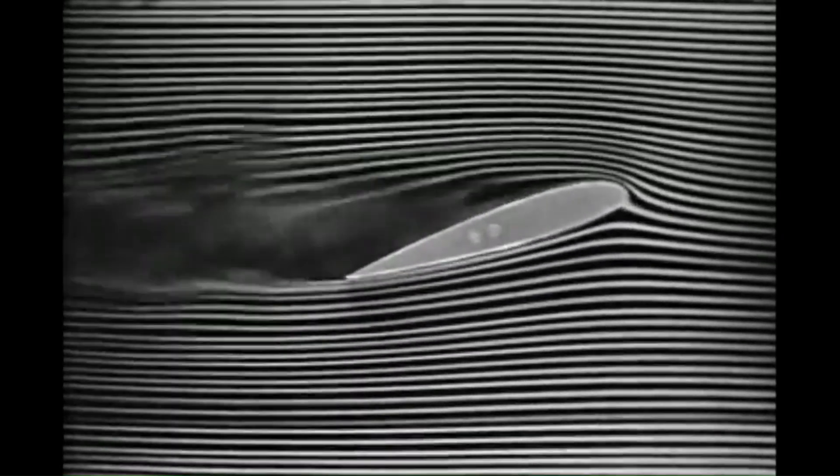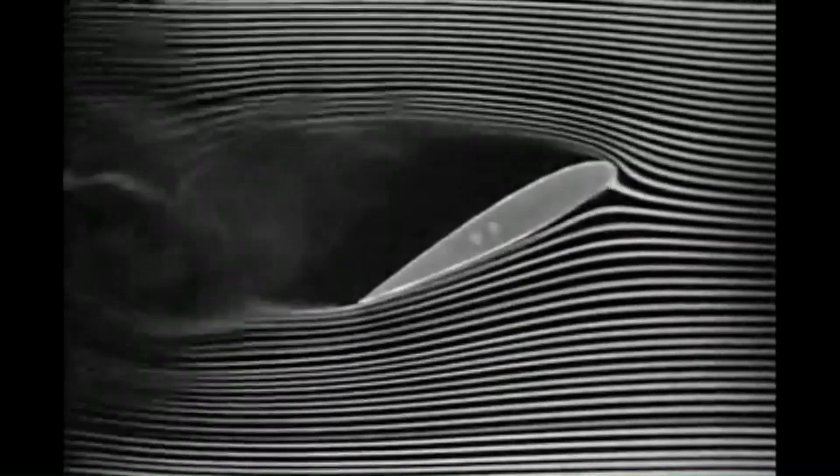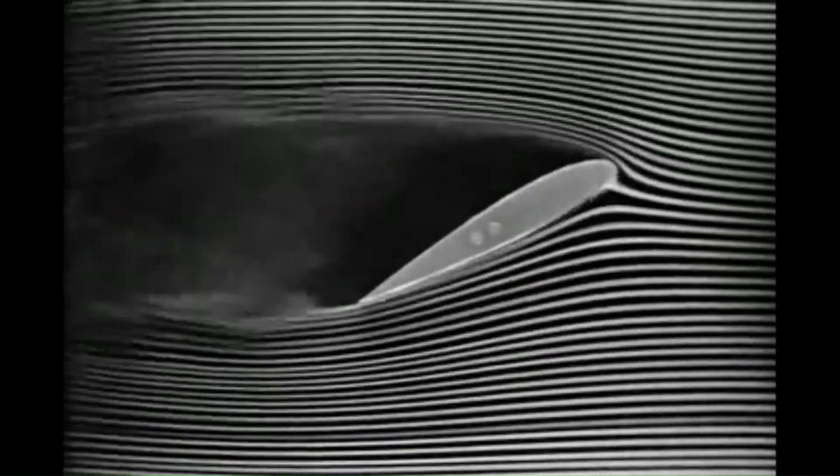As the angle of attack increases, it becomes harder for the air to keep following the contour as it flows over the upper surface of the airfoil. At some critical angle of attack, the airflow will stop following the airfoil's curve, and the flow will break away from the surface. This is called flow separation.